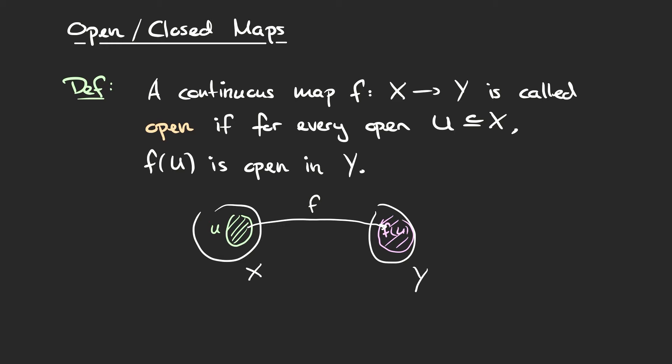So f maps U to f(U), and the condition for this map being open is that if U is open, then f(U) is also open. Notice that this is sort of the inverse condition to a map being continuous. A continuous map is a map for which the pre-image of every open set is open, whereas here we want the image of every open set in X to be open in Y. Continuous maps allow us to pull back open sets along the map, while an open map allows us to push forward open sets.